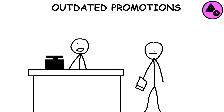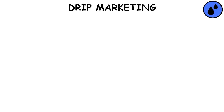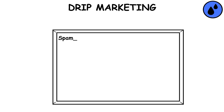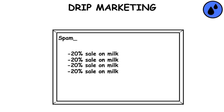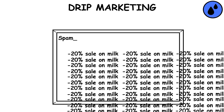Outdated Promotions: When you arrive in front of the checkout counter with an item, you're less inclined to go back and put it back when the cashier tells you that the 50% sale you've seen has expired. Drip Marketing: A strategy that sends a series of pre-written messages to customers or prospects over time, often via email, based on recipient behavior or status, and typically automated.